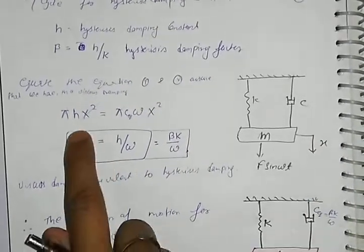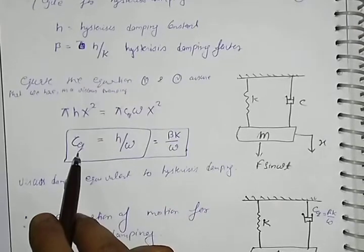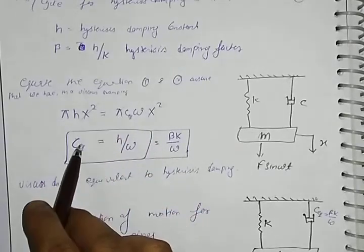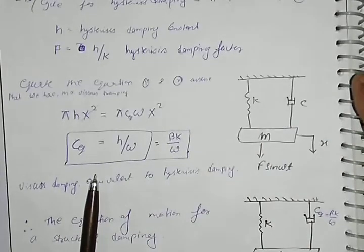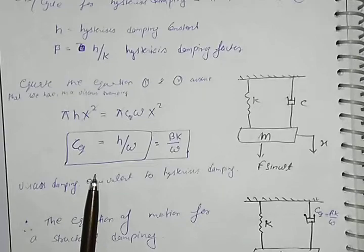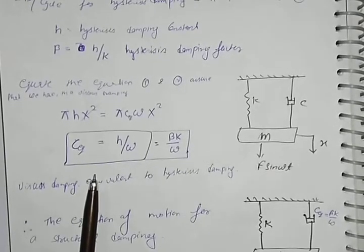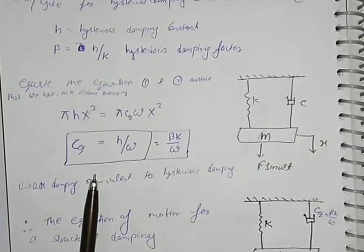Equating the two energy dissipation equations, π cancels and x² cancels, giving us c_equivalent = h/ω. This means we use equivalent viscous damping to analyze structural damping systems — we convert the structural damping into an equivalent viscous damping constant c_equivalent.